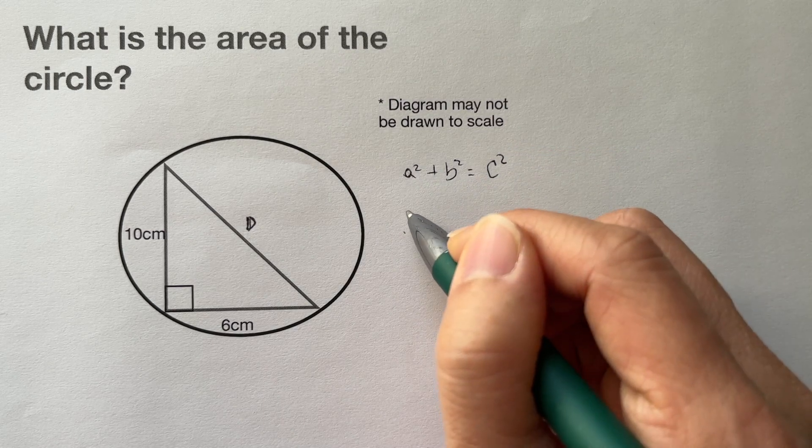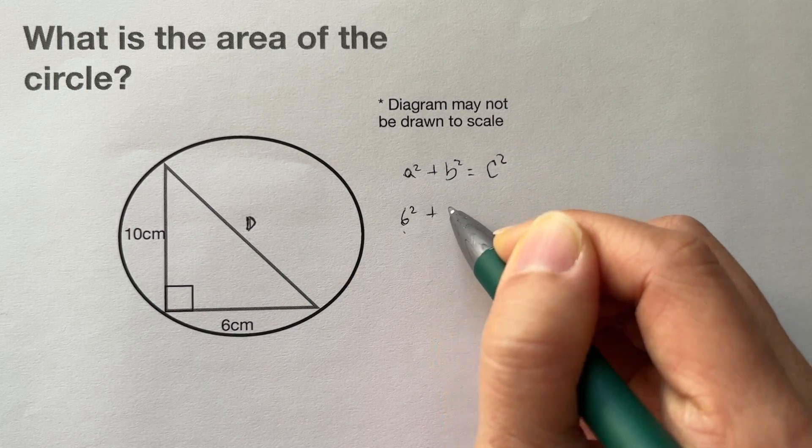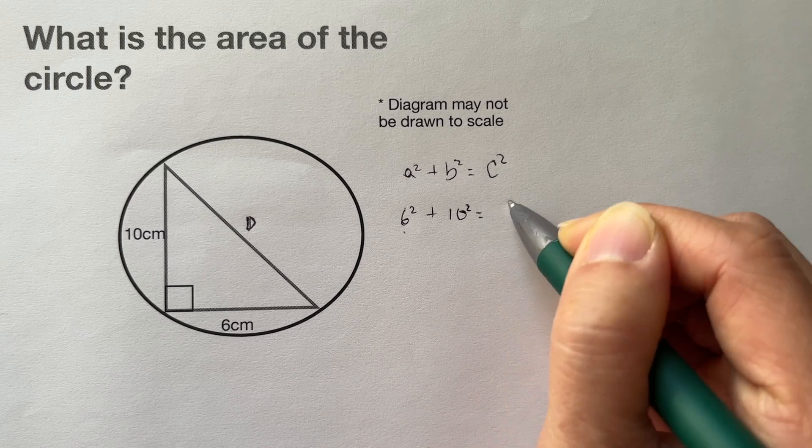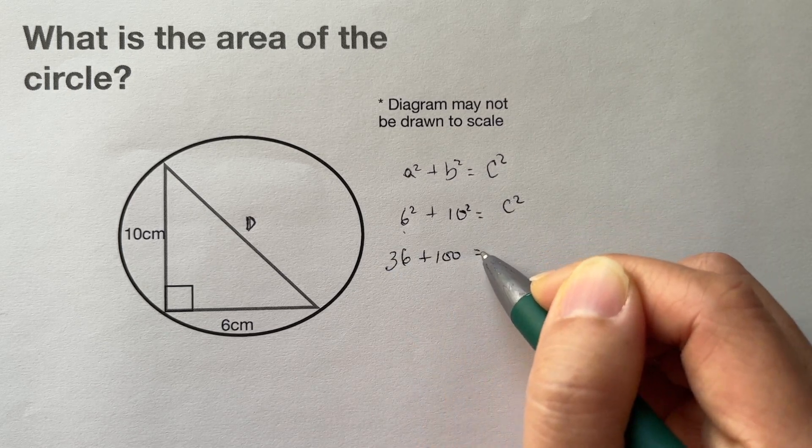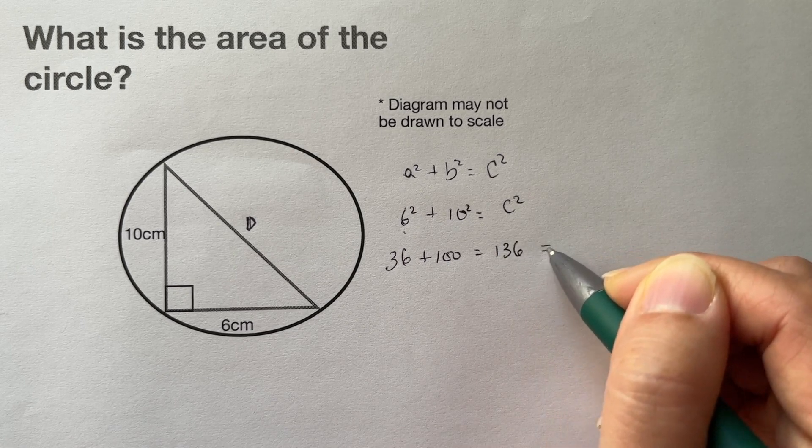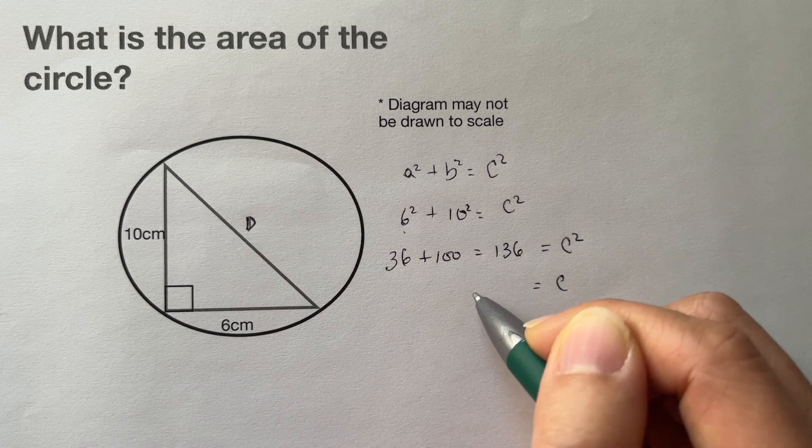Using the formula a² + b² = c², we have 6² + 10² = c². This gives us 36 + 100 = 136 = c², so c is the square root of 136.